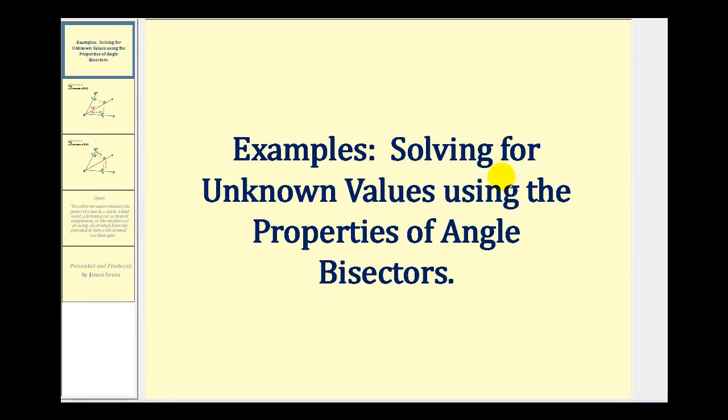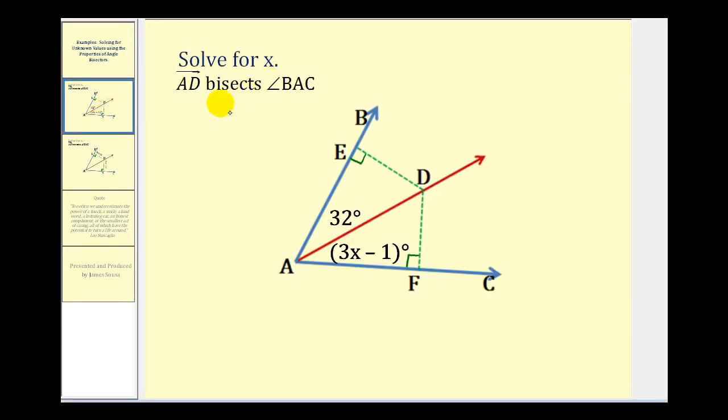Welcome to examples of solving for unknown values using the properties of angle bisectors. So here we're given that ray AD bisects angle BAC. Remember that tells us that angle BAD is congruent to angle DAF. So this angle here is congruent to this angle here.